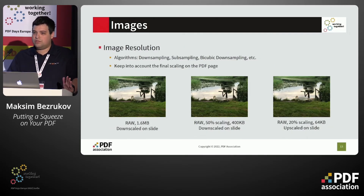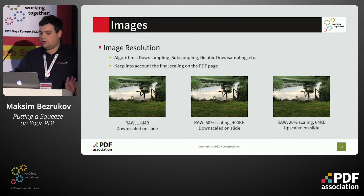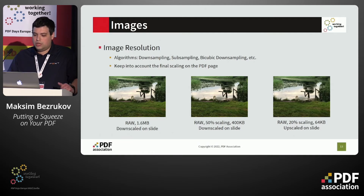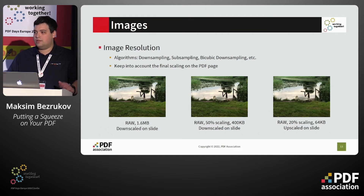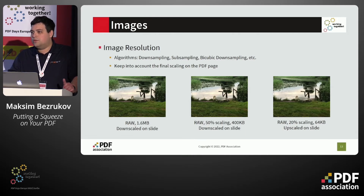For raw image format, we can reduce image resolution — it's a fairly simple operation as we operate only on the bitstream itself. There are many different downsampling algorithms available, such as subsampling, bicubic downsampling, and others. When applying this change, keep in mind the final scaling on the PDF page: if the image is already being downscaled when applied to the page, we will not see appearance changes in most cases. But if after rescaling the image ends up being upscaled, it would affect appearance quite dramatically. The ideal resolution is one where no downscaling or upscaling is needed when drawing the page.